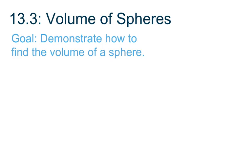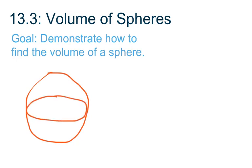Let's start off with a diagram of a sphere. We're going to start with a circle, then draw an oval inside it with a dot in the center of that oval — and there we have a rough drawing of a sphere. Our formula for the volume of a sphere is V equals 4 thirds times pi times the radius cubed.